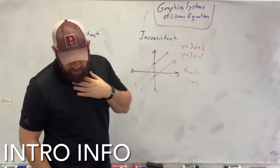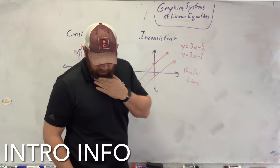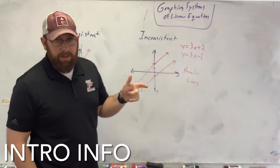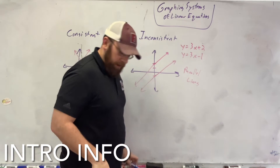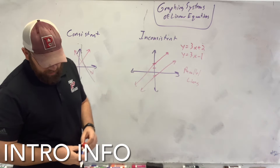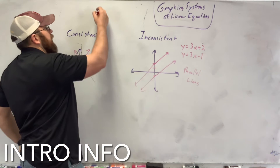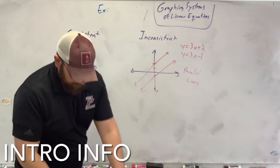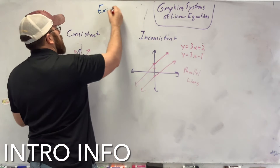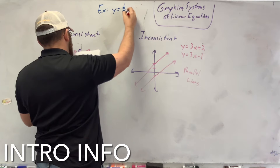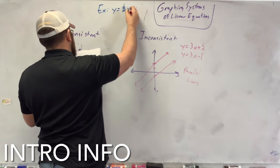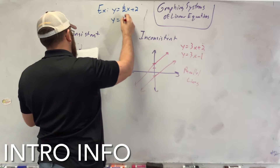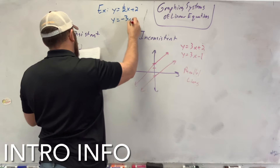You also have independent equations, which is a set of linear equations that share exactly one common point as a point of intersection. An example of an independent equation would be y equals 1/2 x plus 2 and y equals negative 3x plus 2.